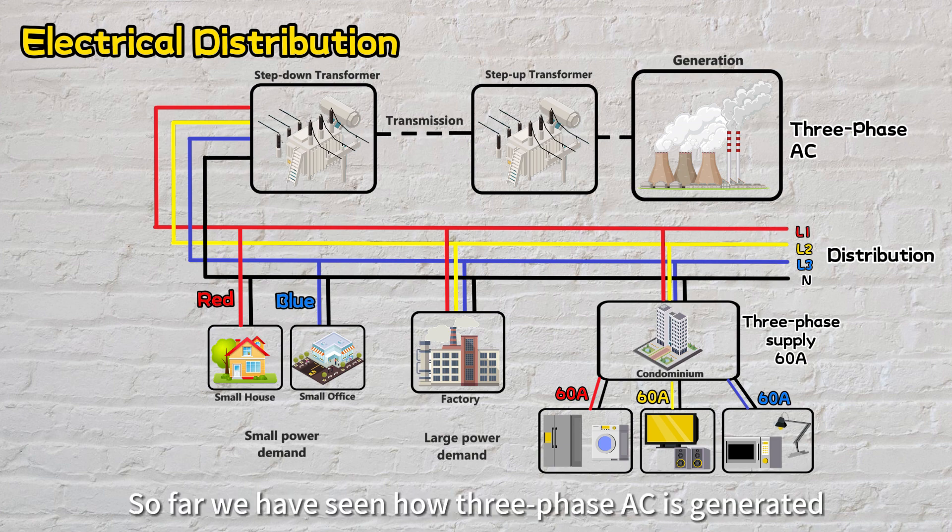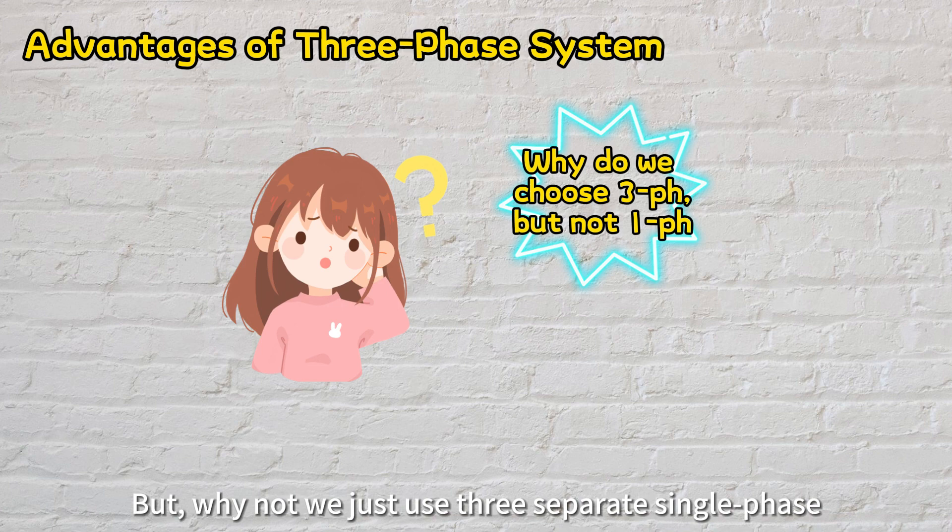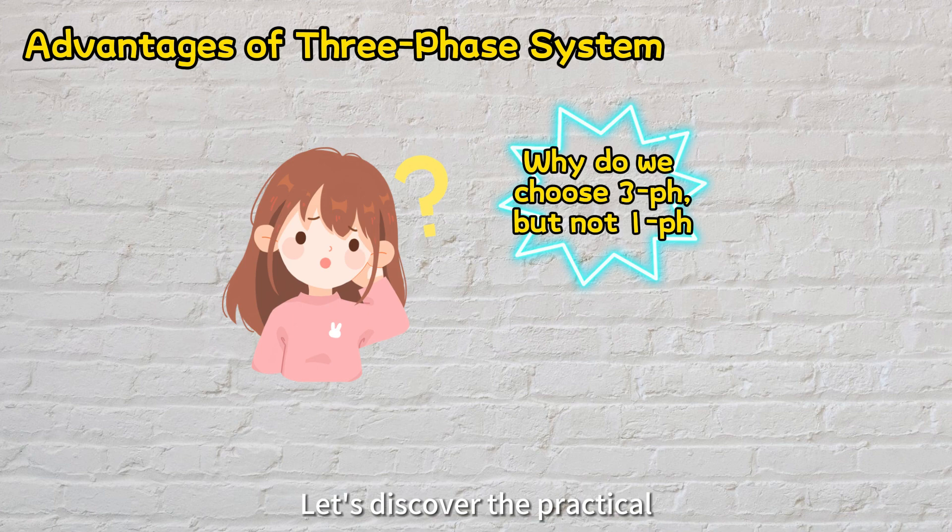So far, we have seen how three-phase AC is generated and distributed. But why don't we just use three separate single-phase systems instead of complicating things with a three-phase system? Let's discover the practical reasons that drive their adoption.